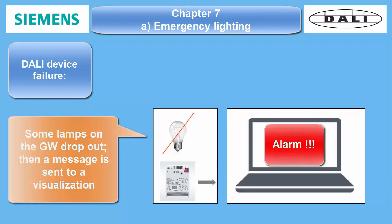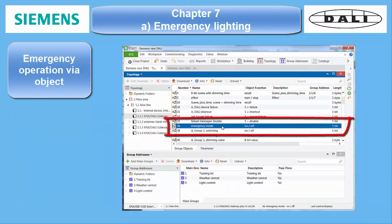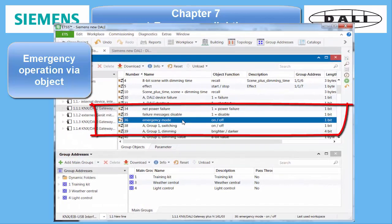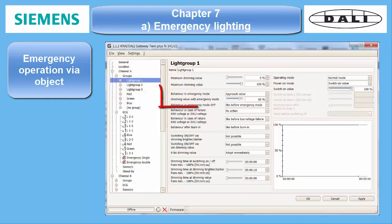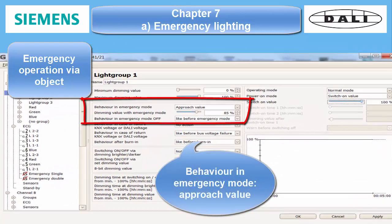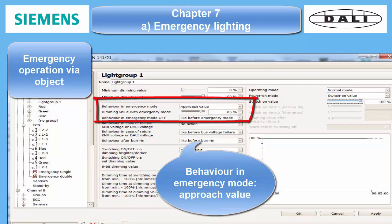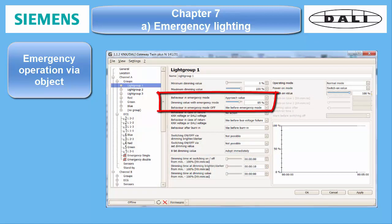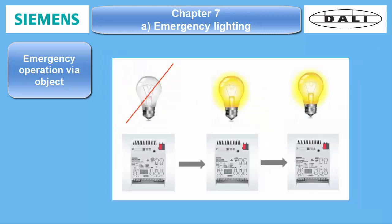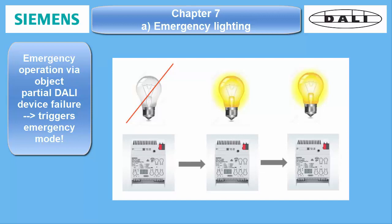Emergency operation and synchronization. All Siemens DALI gateways possess a central communication object, emergency operation number 36. Together with the parameter setting of either groups or ECG behavior in emergency mode, it is possible to set all emergency luminaires into a certain emergency operation level at the same time. As a use case, the partial device failure message can be used to trigger this object.